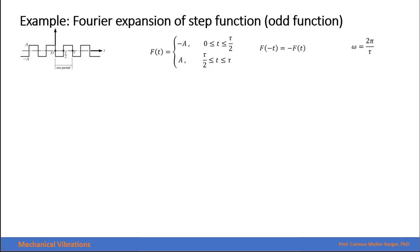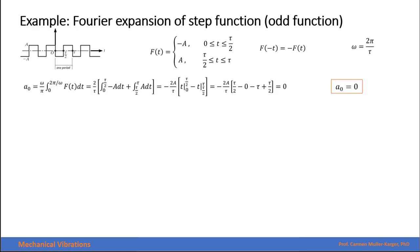For example, consider a function that is odd, described by this piecewise definition: a negative amplitude A for the first half of the period, and a positive amplitude A for the second half. This represents one complete period. The fundamental frequency is ω = 2π divided by the period τ. Let's find the Fourier coefficients for this function.